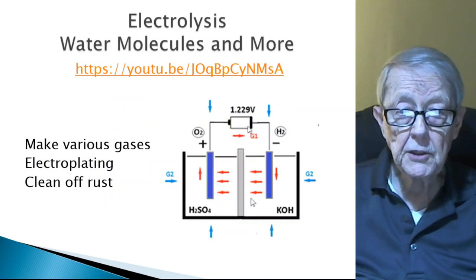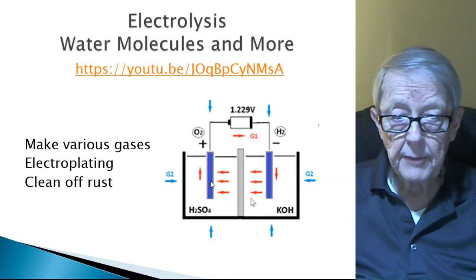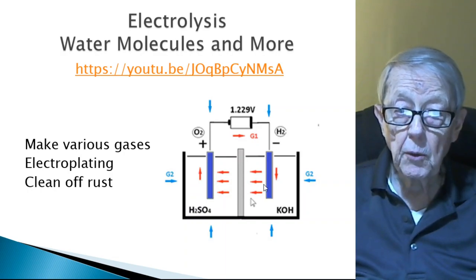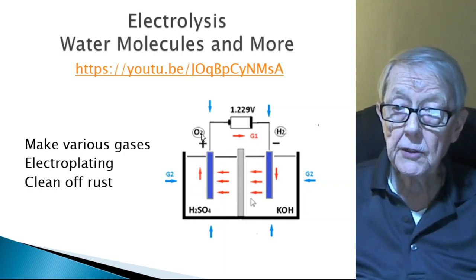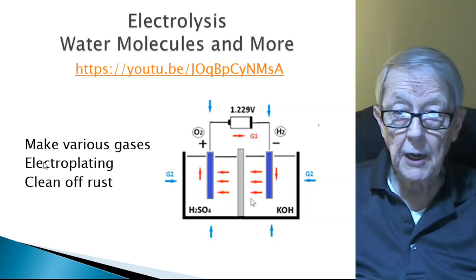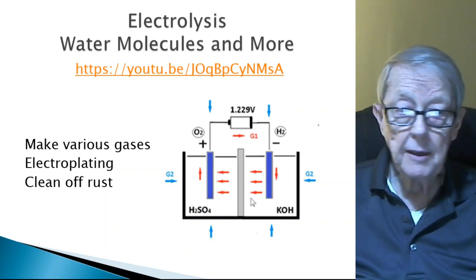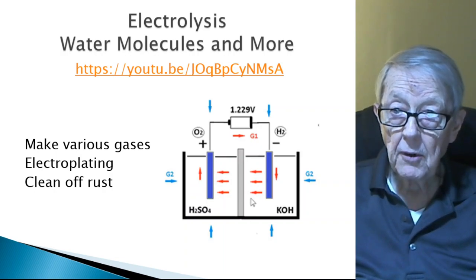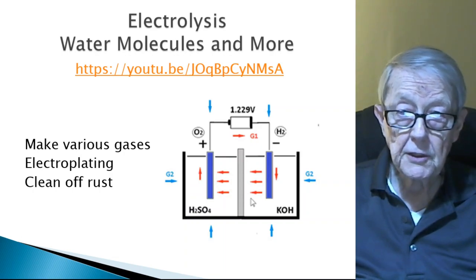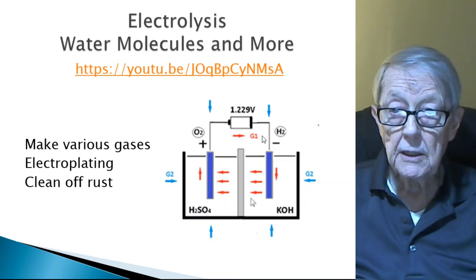Next one is electrolysis. The G1 particles are coming out the other way, hitting water with an electrolyte, and you can split the water into hydrogen gas and oxygen gas. Another splitting. Electrolysis does electroplating, which is actually painting a copper onto a piece of metal, or it can clean off rust, and it's literally like sandblasting the rust off when you're using G1 particles.